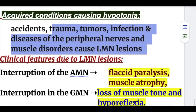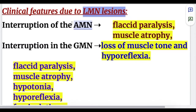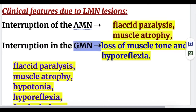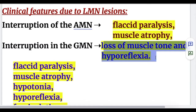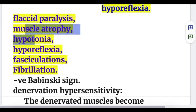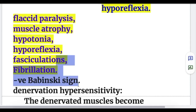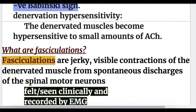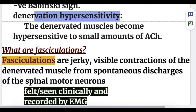Interruption of alpha motor neurons causes flaccid paralysis and muscle atrophy; interruption of gamma motor neurons causes loss of muscle tone and hyporeflexia. Combined alpha and gamma motor neuron interruption produces flaccid paralysis, muscle atrophy, hypotonia, hyporeflexia, fasciculations, fibrillation, a negative Babinski sign, and denervation hypersensitivity.